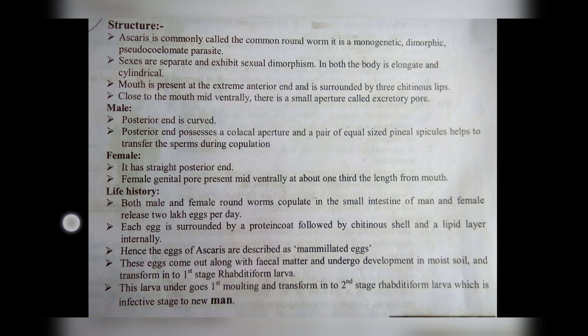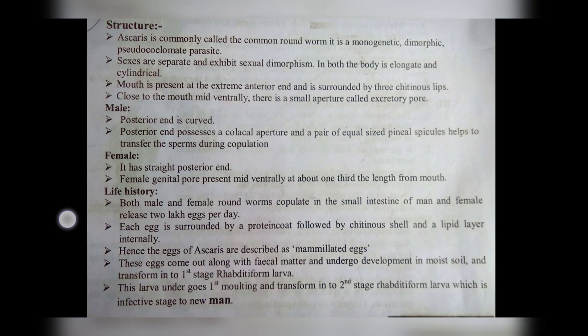Now coming to the female structure of Ascaris. It has a straight posterior end. The female genital pore is present mid-ventrally at about one-third the length from the mouth.